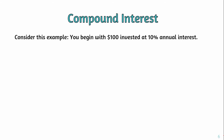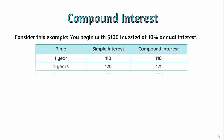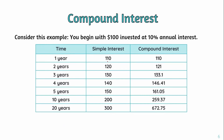Consider this comparison example: you begin with $100 invested at 10% interest. With simple interest, after one year you have $110; with compound interest, also $110. After two years, simple interest gives $120, while compound interest gives $121. After three years, simple interest gives $130, compound interest gives $133.1. After four years, simple gives $140, compound gives $146. After five years, simple gives $150, compound gives $161.05.